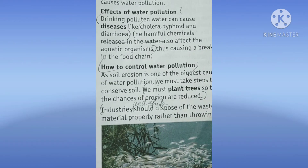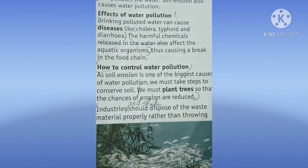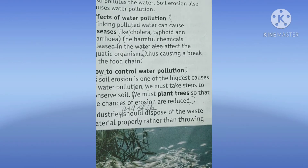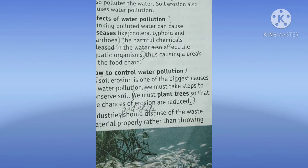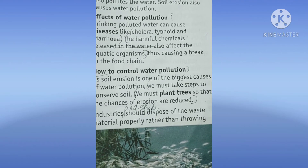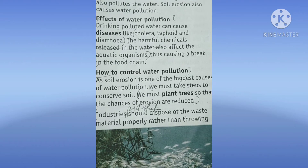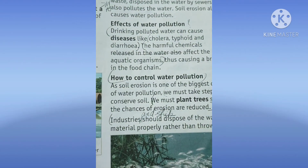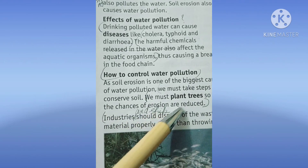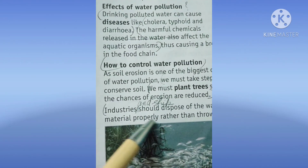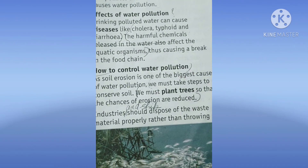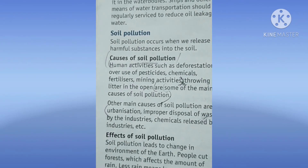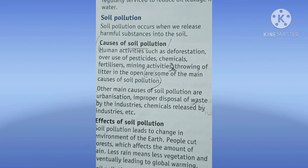How to control water pollution? As soil erosion is one of the biggest causes of water pollution, we must take steps to conserve soil — soil ko bachana chahiye, erosion se. We must plant trees so that the chances of erosion are reduced. To stop soil erosion we can plant more and more trees. Then, industries should dispose of waste material properly rather than throwing it in the water bodies. Some other methods should be used.